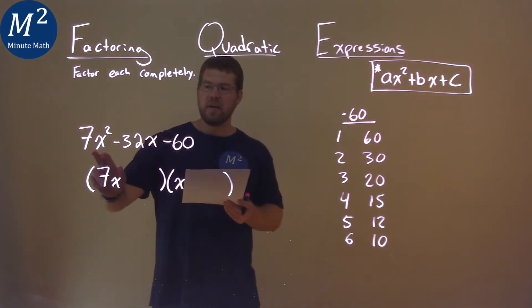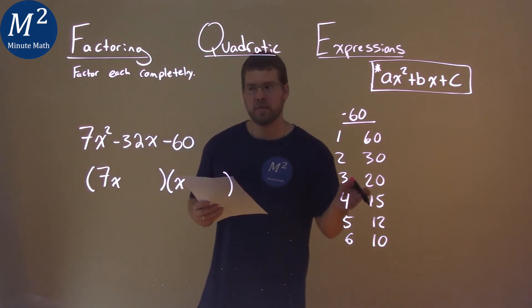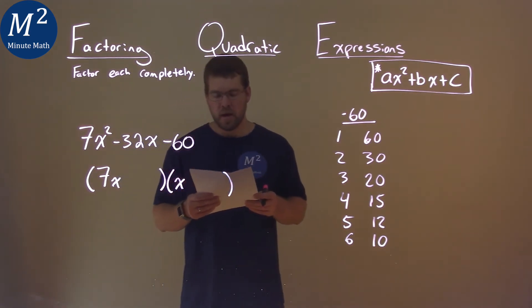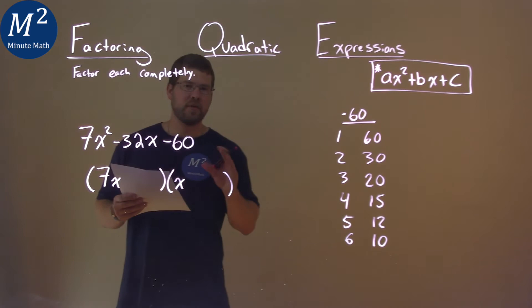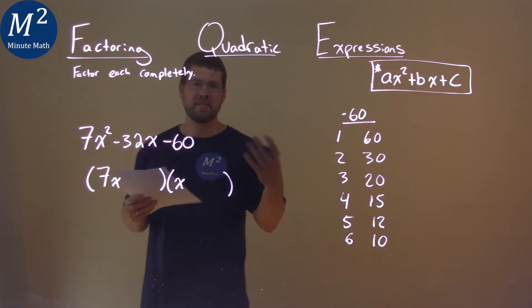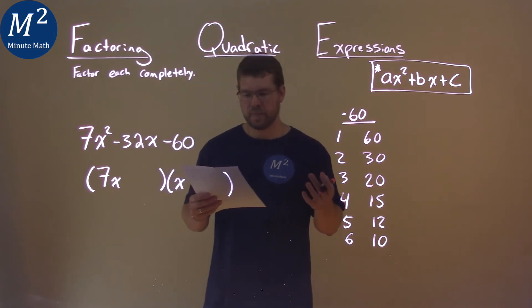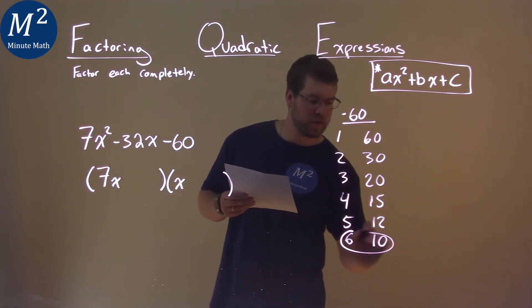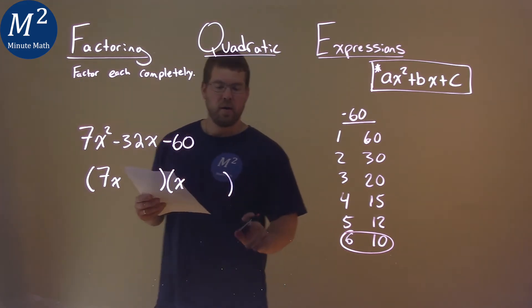Now, we have to see 7 times which one of these plus the other one gets me negative 32. And the thing I'm looking at is doing some mental math as I'm going. 7 times which one gets me close to 32? Well, I know 7 times 6 is 42, so I'm going to look at this one here, and I want to make it negative.